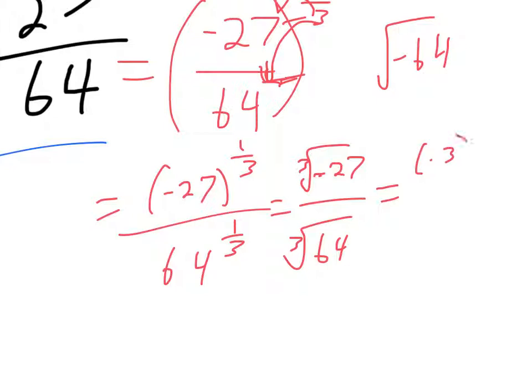How about negative 3? If you do negative 3 times itself three times, that does make negative 27 because negative 3 times negative 3 makes positive 9, and positive 9 times negative 3 makes negative 27.